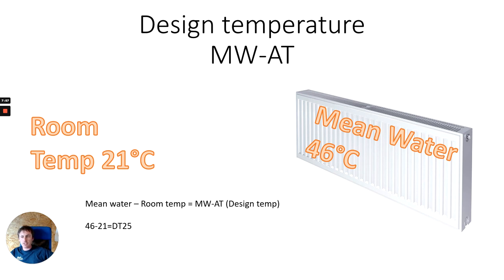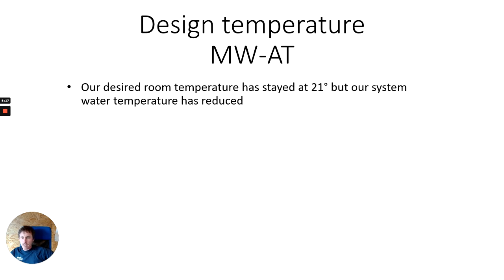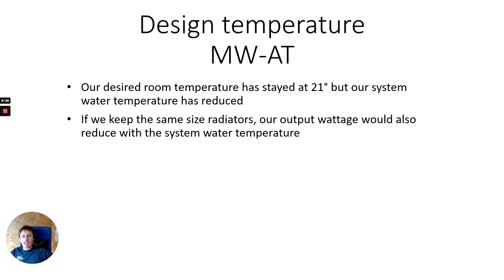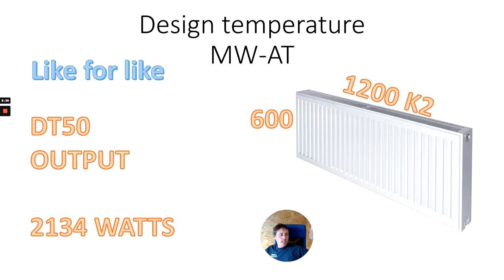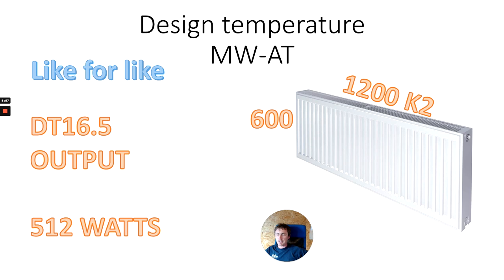To show the difference: with a mean water temperature of 46°C and a room temperature of 21°C, we're now on DT25. At a mean water temperature of 37.5°C and a room temperature of 21°C, we get a design temperature of 16.5. Our design room temperature stayed at 21°C, but the system water temperature has reduced. If we keep the same size radiators, the output wattage also reduces. For a 1200×600 K2: at DT50 output is 2,134 watts; stepped down to DT25 it's 866 watts; and at DT16.5 in air source heat pump territory, we're only getting about a quarter of the wattage we had at DT50.